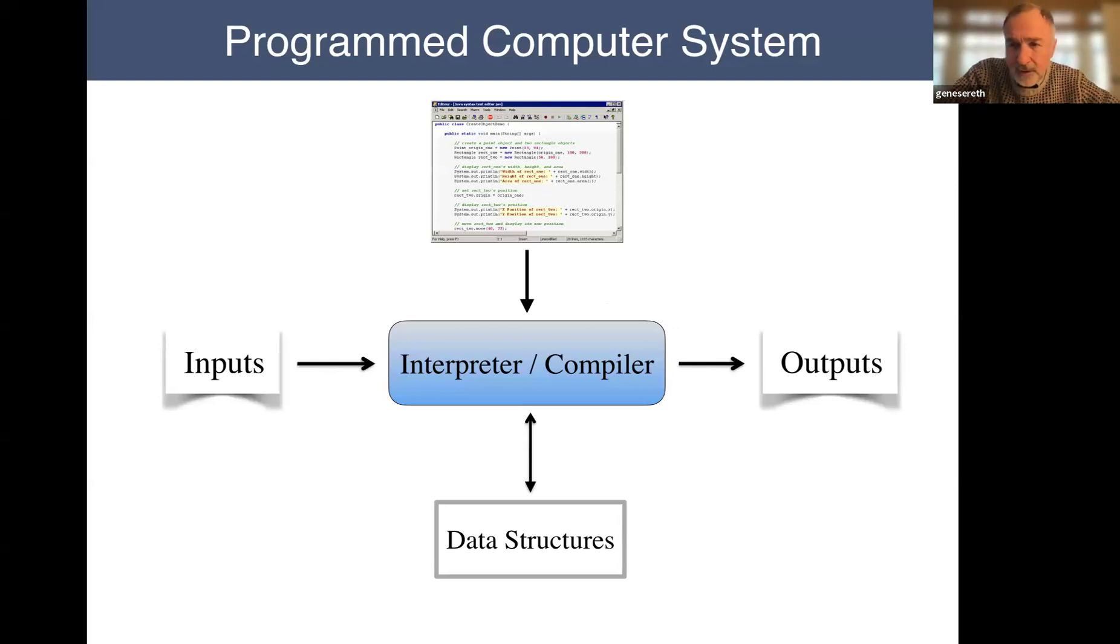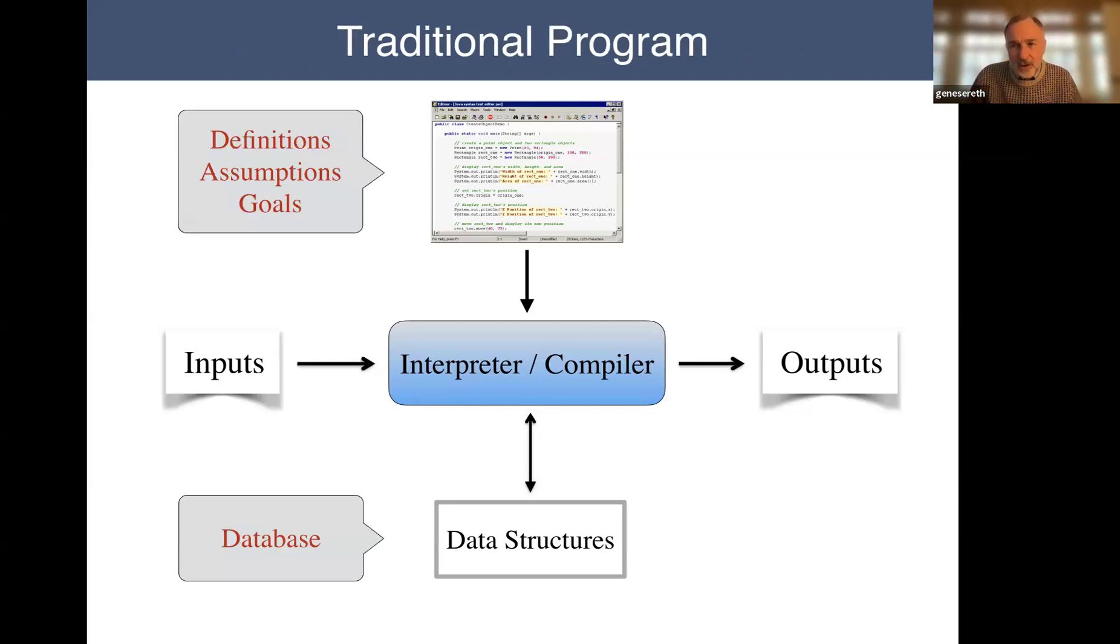Some data structures, and then there's some program that tells the computer what to do with those data structures and how to process the inputs and the outputs. And when programmers write those programs, they typically start with some sort of specification, formal or informal specification of what the program is supposed to do. There are some definitions about the application area, some assumptions about that area, some goals that they would like the program to accomplish. And they usually think of the data structures as representing some information about that data structure. And that's what they use in order to generate the program and the data structures.